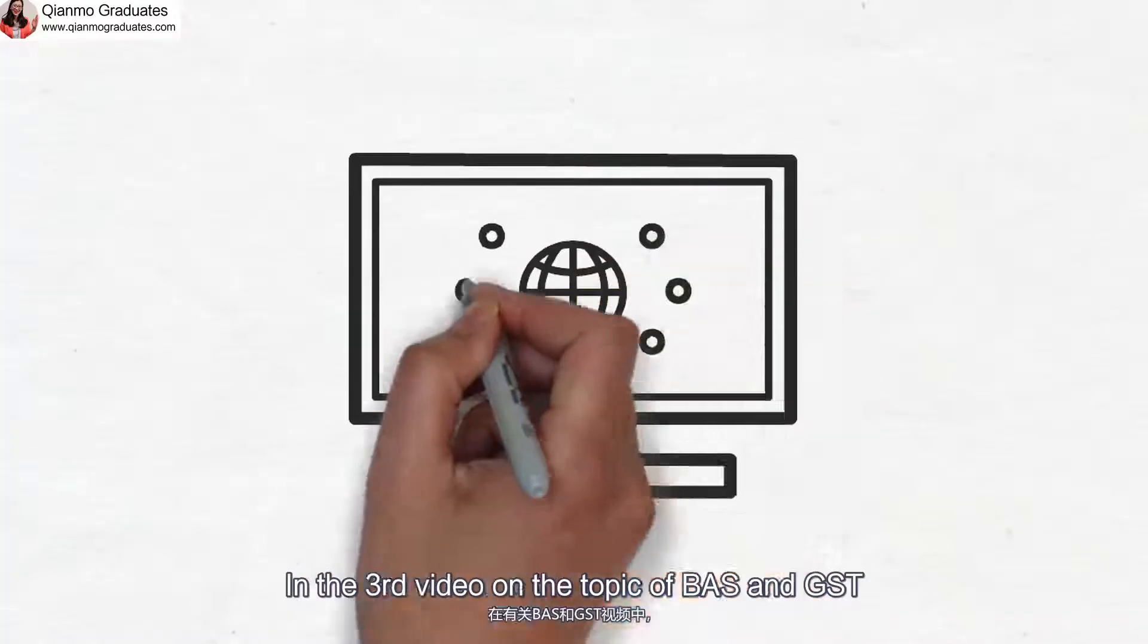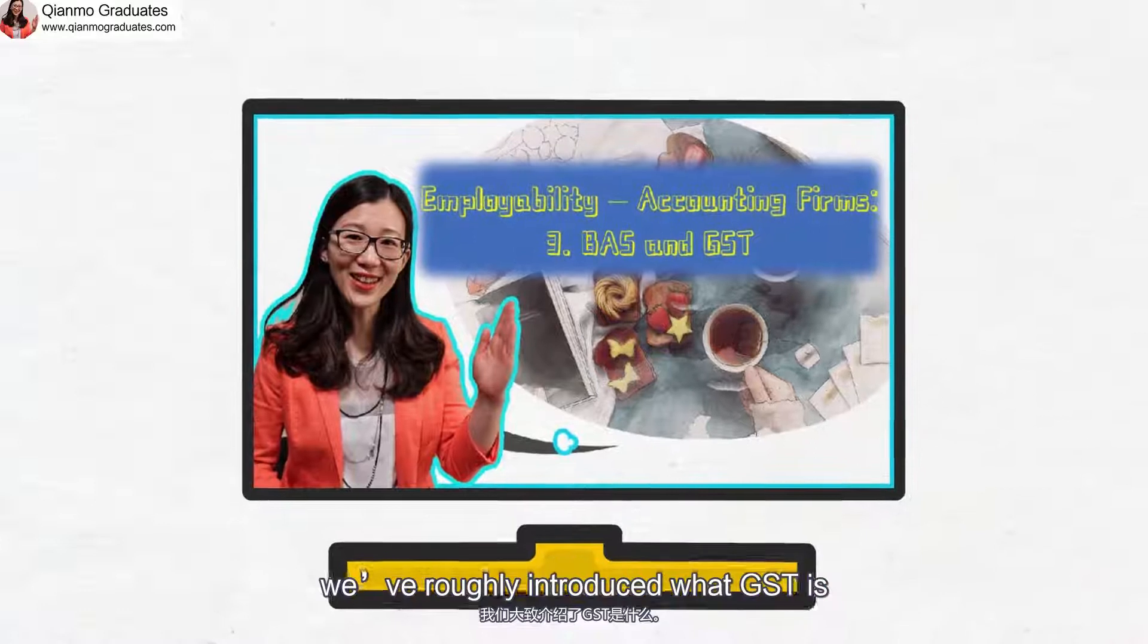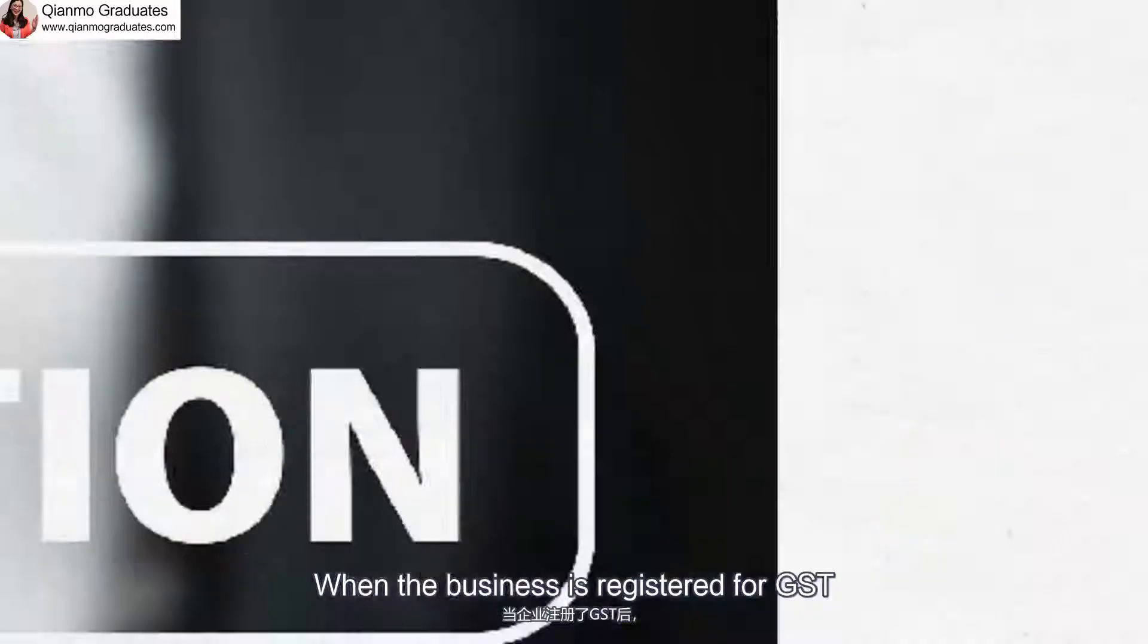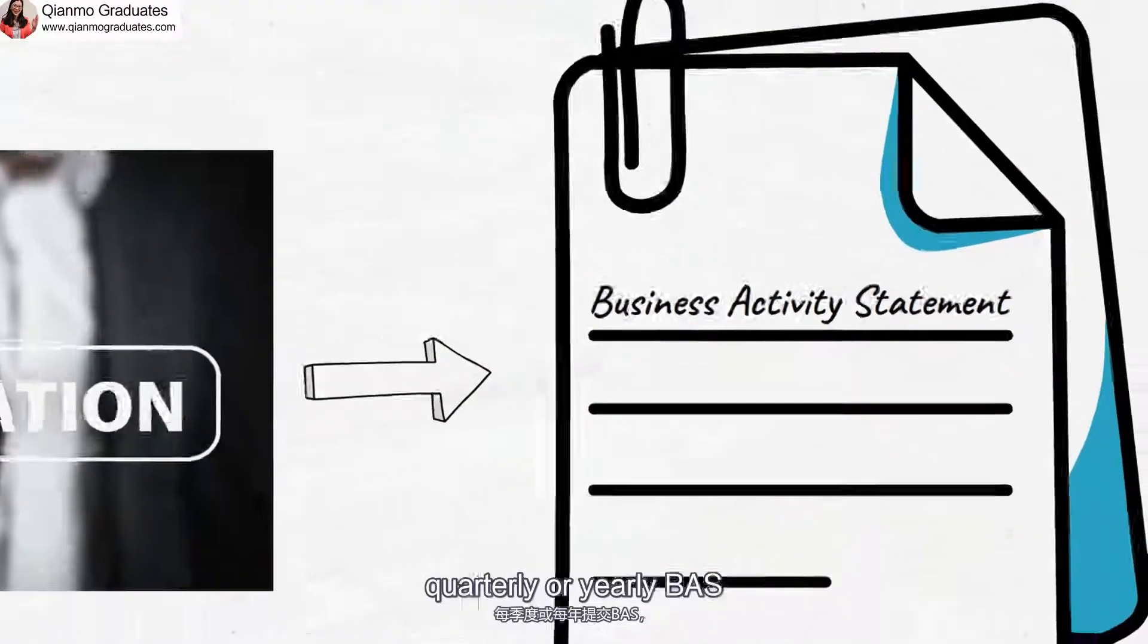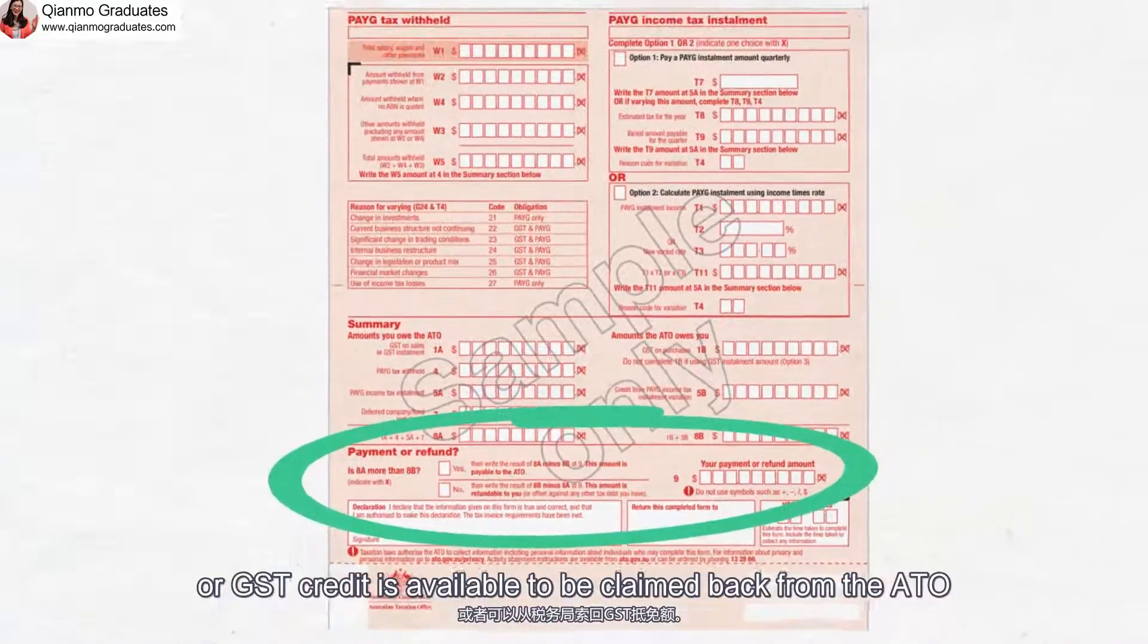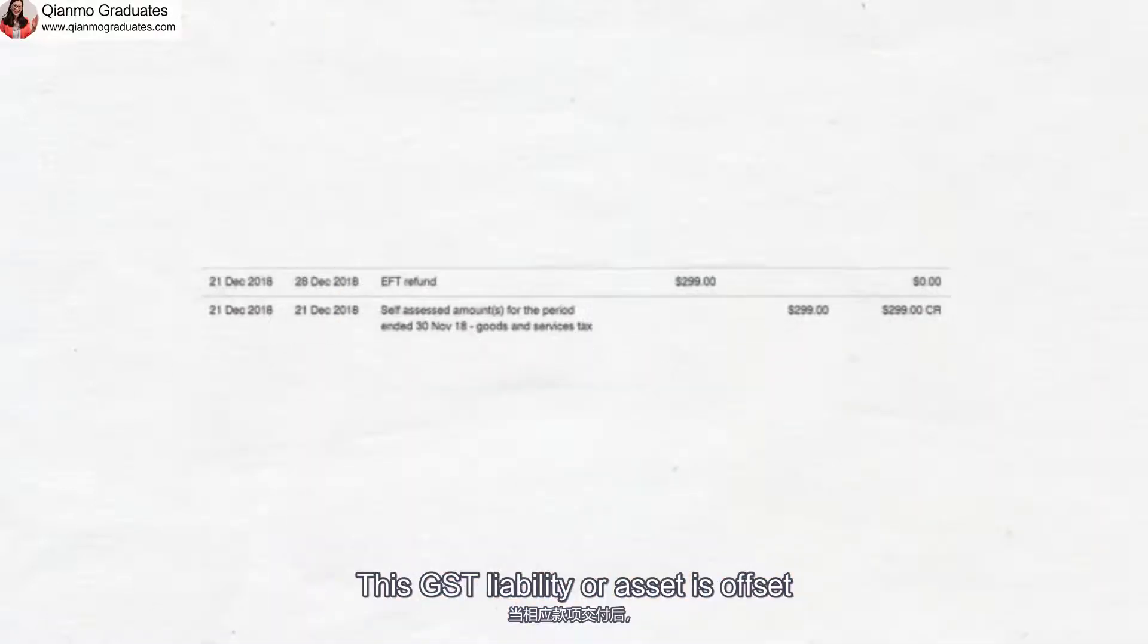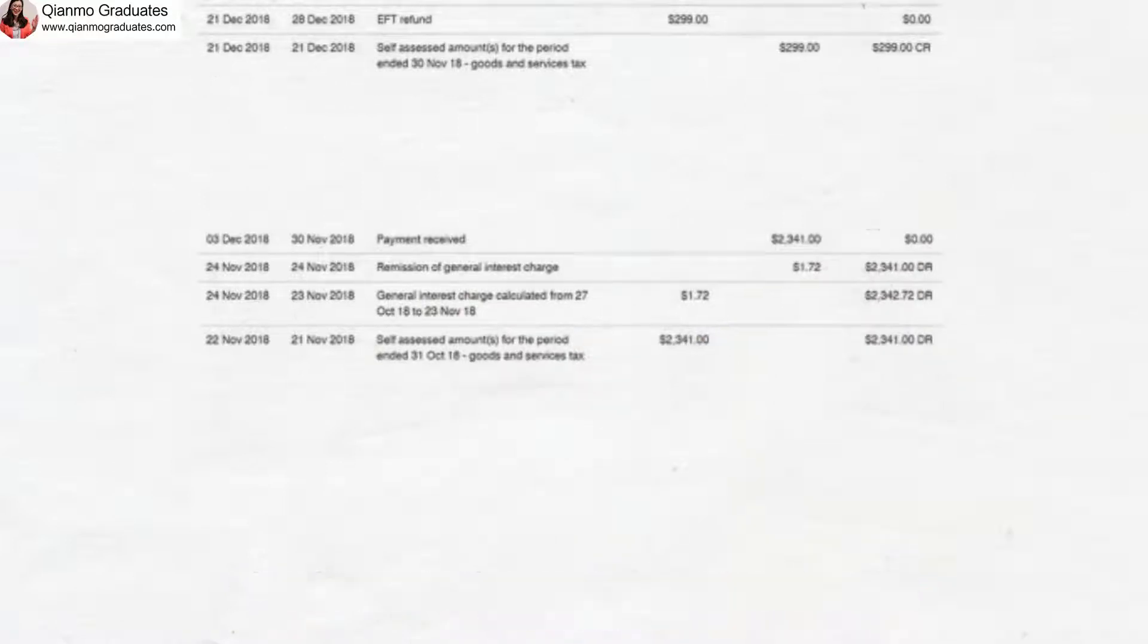In the third video on the topic of BATS and GST, we've roughly introduced what GST is. When the business is registered for GST, they are obliged to lodge monthly, quarterly or yearly BATS. A GST liability is payable to the ATO or GST credit is available to be claimed back from the ATO. This GST liability or asset is offset when the payment is processed either to or from ATO.